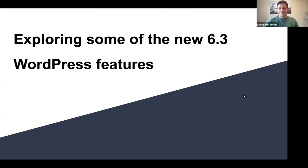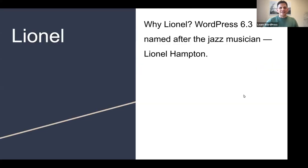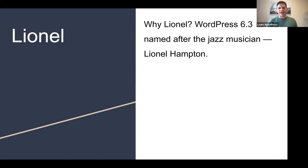WordPress 6.3 is called Lionel, named after the jazz musician Lionel Hampton. All new releases are named after jazz musicians — a lovely tradition.